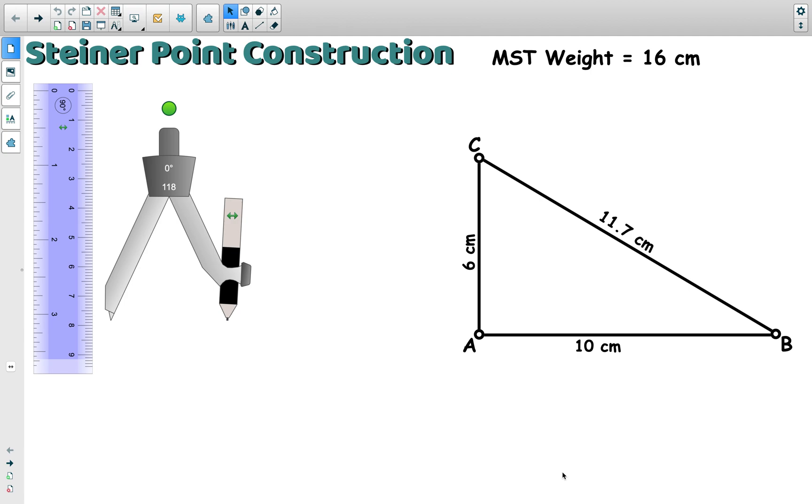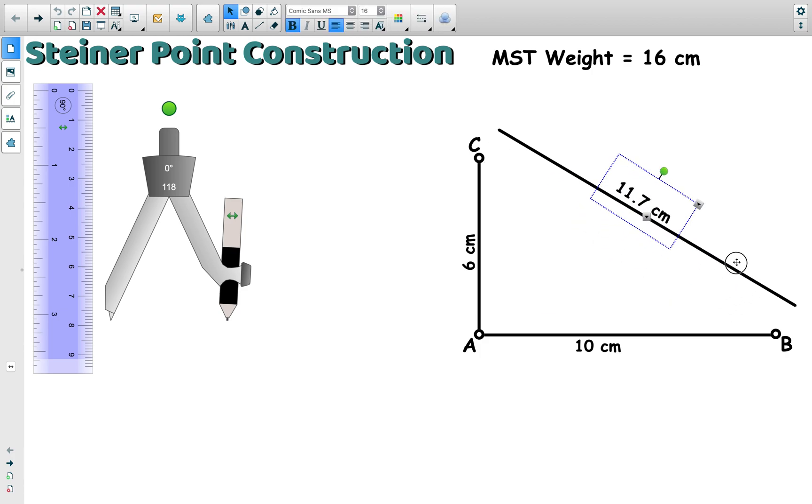Okay, so in this video we're going to create a Steiner point to construct a minimum network. So you can see here we have a triangle which represents a network with three nodes, and as it is now there's a circuit in the network. We could make the network more efficient by removing one edge to break the circuit.